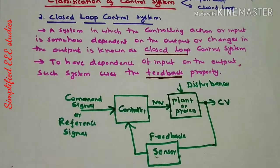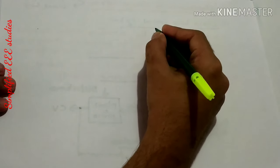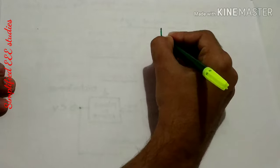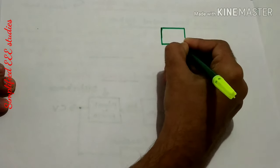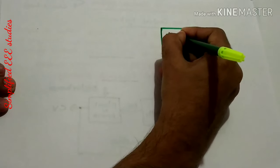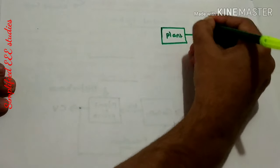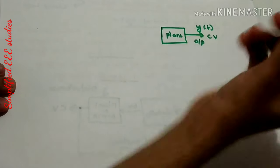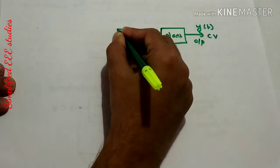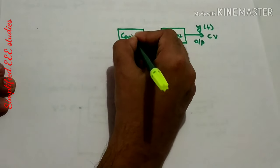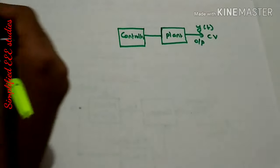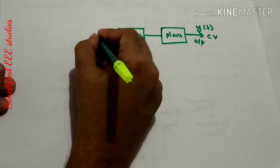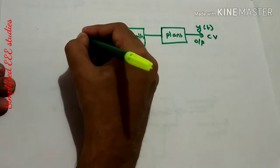I would like to modify the closed loop control system in another manner. Let us see the modified closed loop control system — it is almost similar but I will be showing some modifications. We have a plant, and the output will be the controlled variable, y(t). Then we have a controller, and here we have one comparator.